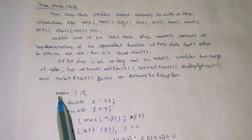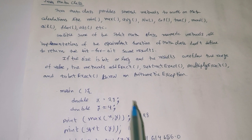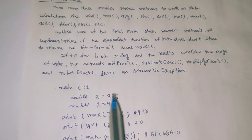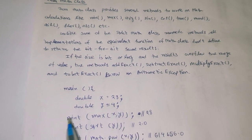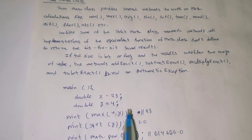In the math class main method example, double x equals 28, double y equals 4. So x is a variable with value 28, and y is a double variable with value 4.